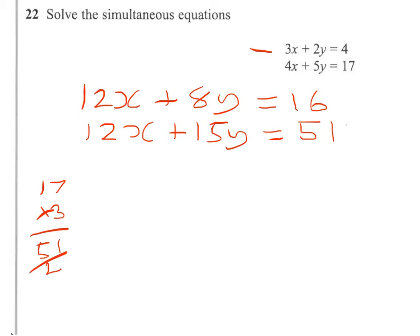Now we can subtract in either direction. So I'm going to subtract that way. 12x take 12x gives me 0. 15y take 8y will give me 7y. And 51 take 16 - no surprises there, it's in the 7 times table - it's 35.